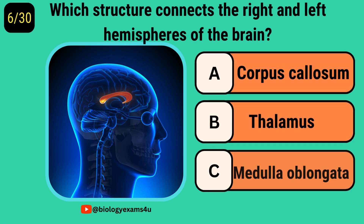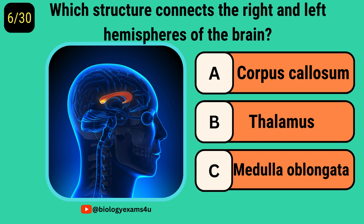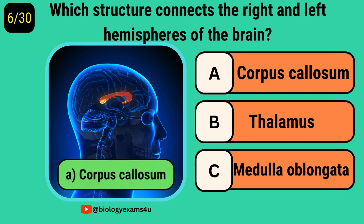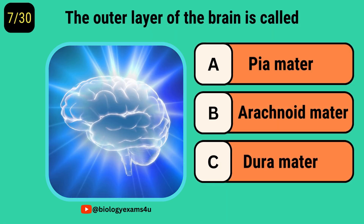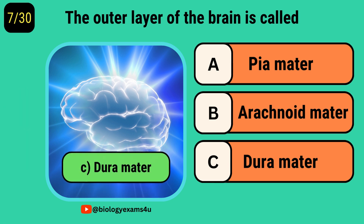Which structure connects the right and left hemispheres of the brain? Corpus callosum. The outer layer of the brain is called? Dura mater.